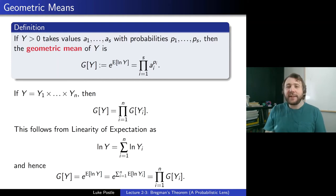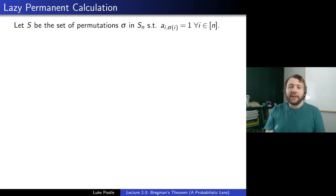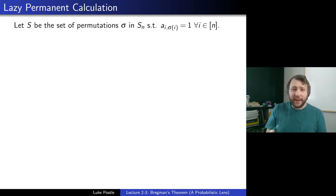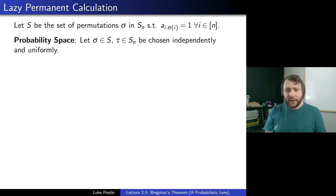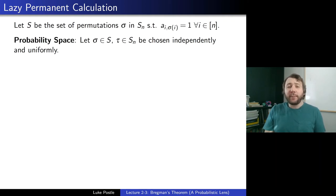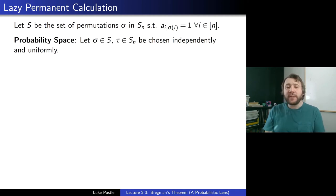Now let's proceed with the proof. We let S be the set of permutations sigma in S_n such that A_{i,sigma(i)} = 1 for every i — these are the permutations counted by the permanent, so per(A) = |S|. We choose sigma in S and tau in S_n independently and uniformly. Sigma gives us a backbone permutation counted by the permanent, while tau gives a random ordering of {1,...,n} used as the order in which to process rows and columns.